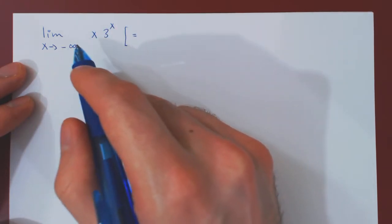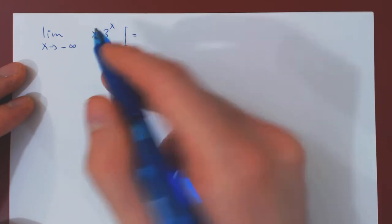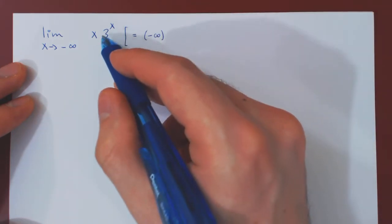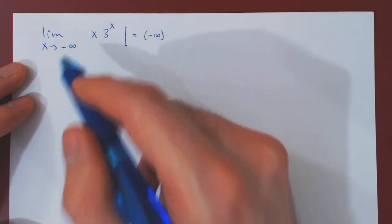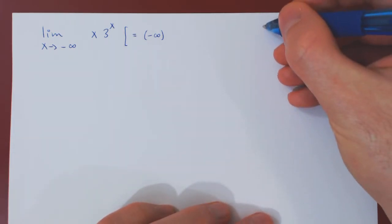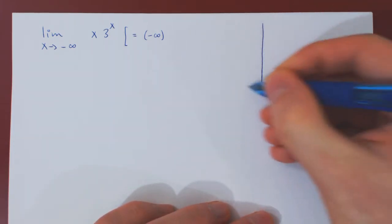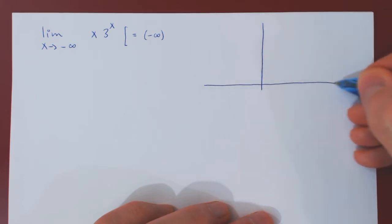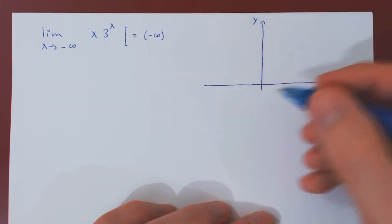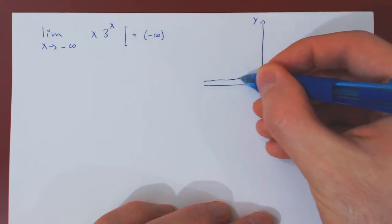We're letting x tend to negative infinity, and we're considering the function x times 3 to the x. Well, clearly when x goes to negative infinity, x goes to negative infinity. And if you're not sure what happens to 3 to the x when x goes to negative infinity, you can sketch the graph of 3 to the x. It's a basic exponential function, and it looks something like this.